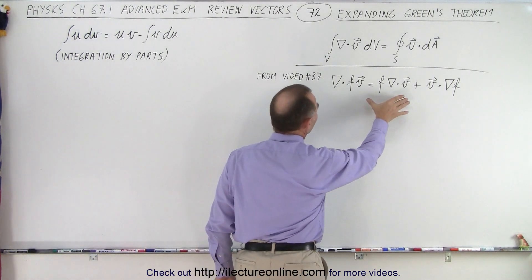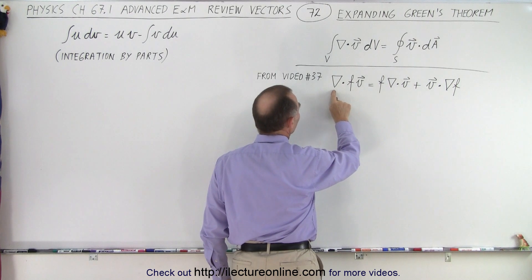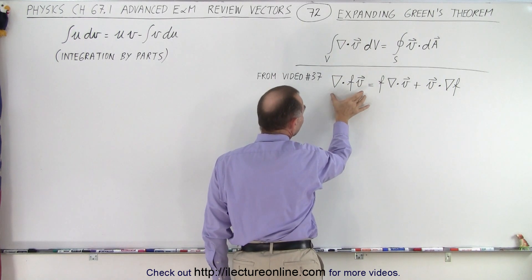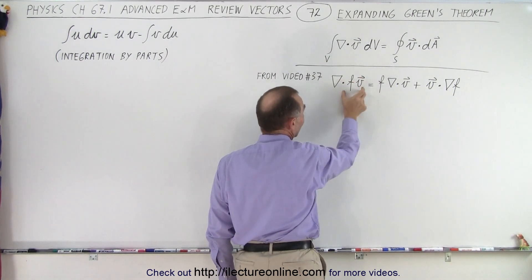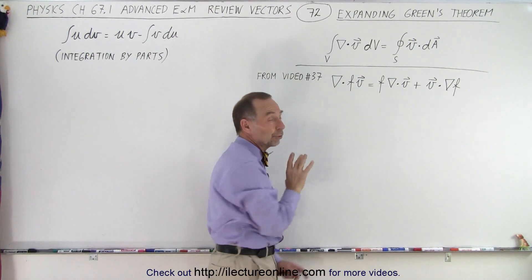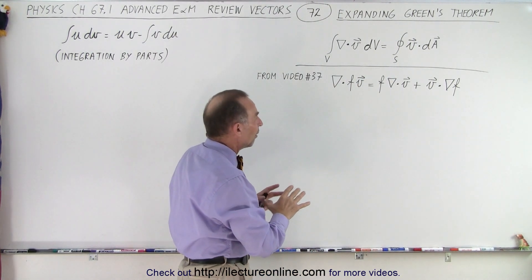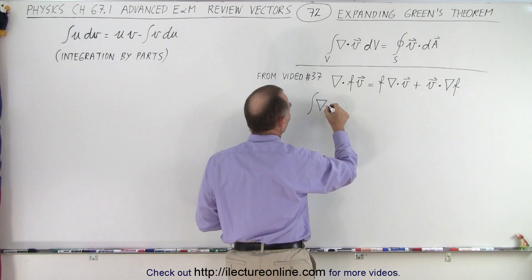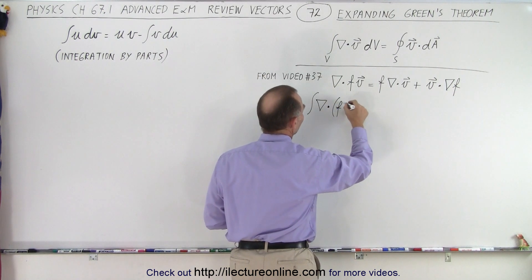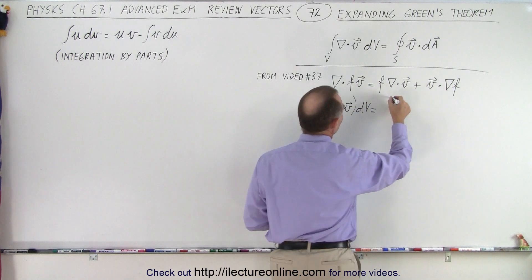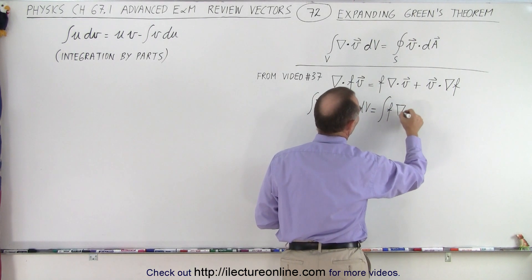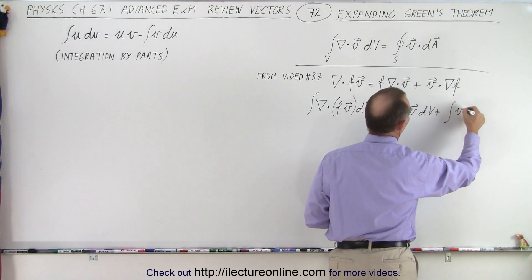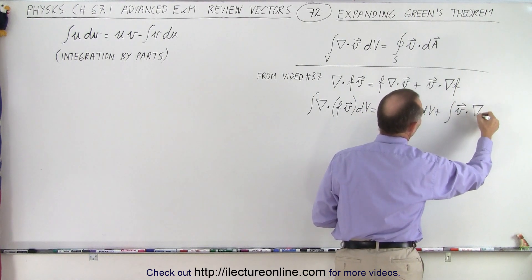We're going to take this expanded form right here. Notice we have the divergence of a product f times V. What we're going to do now is take the integral of both sides over the volume. So on the left side we get the integral of the divergence of the product of f times V dV, equal to the integral of f times the divergence of V dV, plus the integral of V times the gradient of f dV.